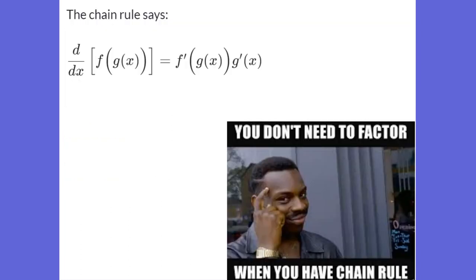A little bit of review on what our Chain Rule was. Our Chain Rule was, when we were taking the derivative of a composite function f of g of x, we have to take the derivative of the outside guy — f prime of g of x — times the derivative of the inside guy, g prime of x. And so this formula is going to help you out big time when it comes to tables.